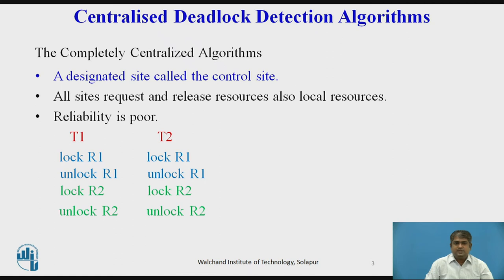For example, suppose two resources R1 and R2 are stored at sites S1 and S2 respectively. Suppose the following two transactions T1 and T2 started almost simultaneously at sites S3 and S4.